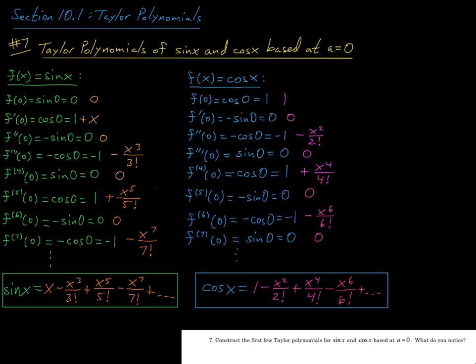Likewise for cosine, it seems plausible that looking at the limit of these polynomials, we're going to get convergence to the cosine function and again, this is true.